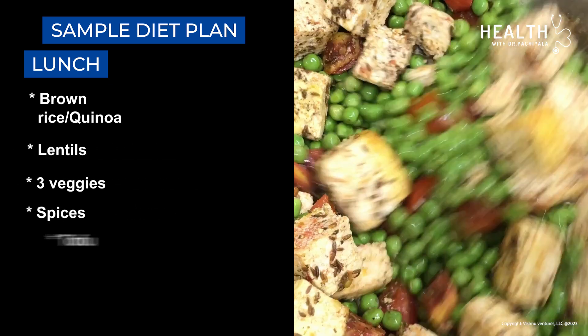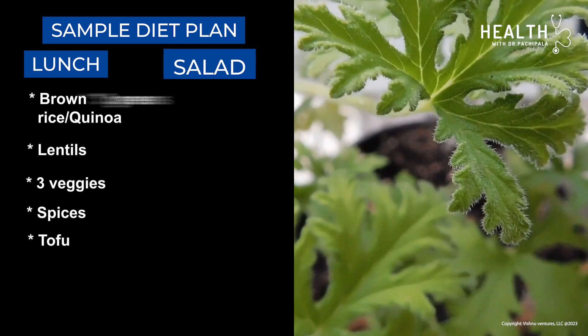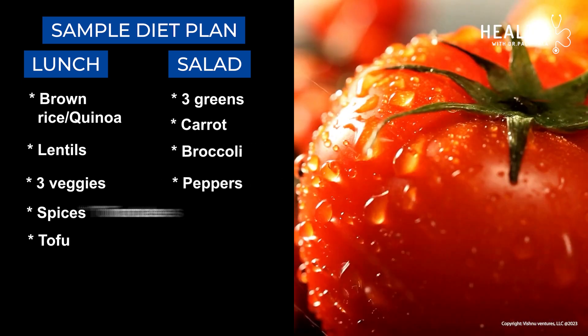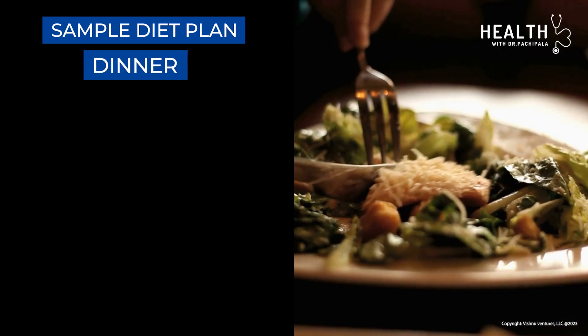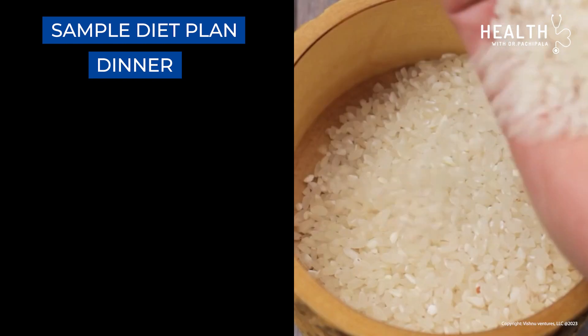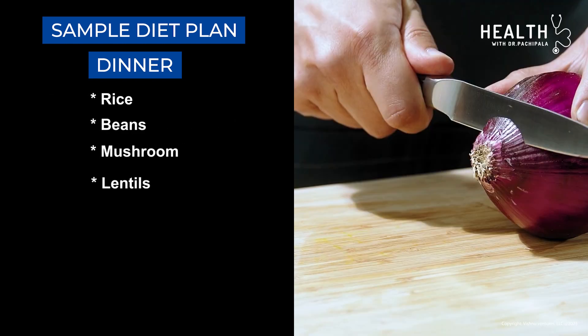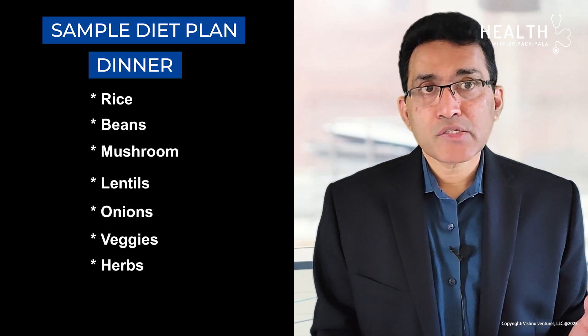For lunch, you can easily get about 8 to 10 varieties by combining rice or grains, lentils, three veggies, spices, and tofu — or you can eat a salad with three greens, carrots, broccoli, peppers, tomatoes, nuts, herbs, and seasoning. For dinner, you can make a dish with rice, beans, mushrooms, lentils, onions, veggies, and herbs — that's a total of 10 varieties, so you can easily eat 20 to 30 varieties a week.